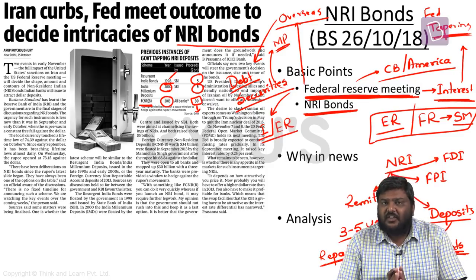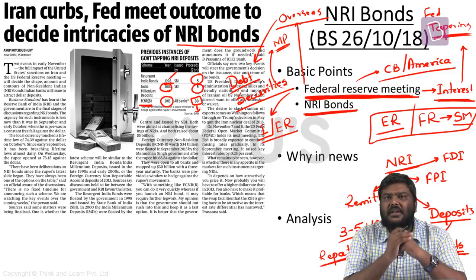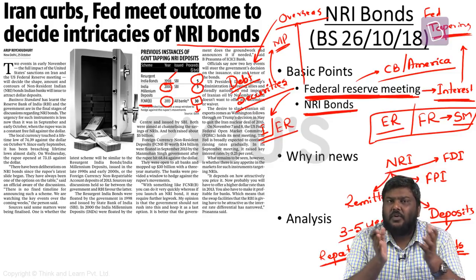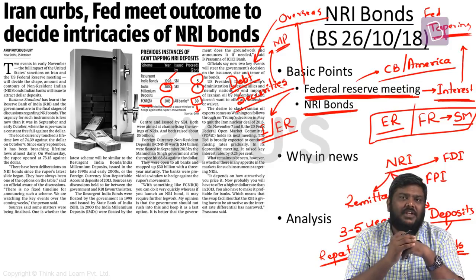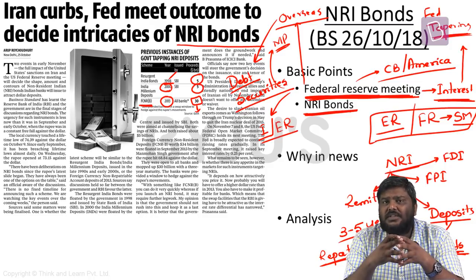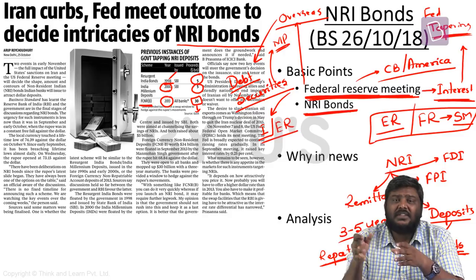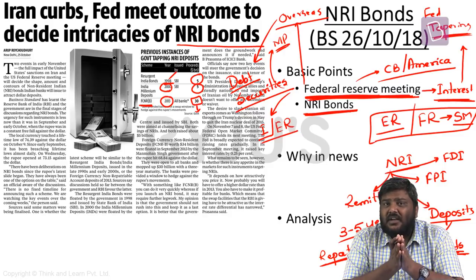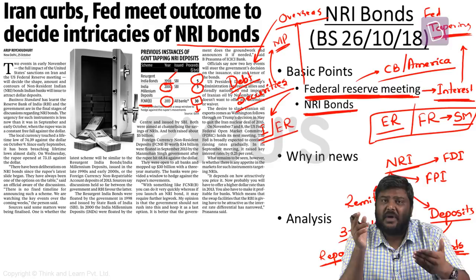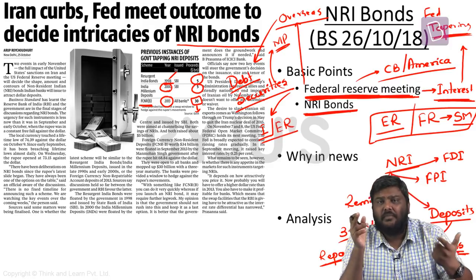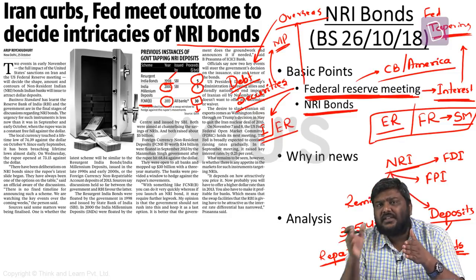Experts say these kinds of bonds should be used as a last resort to control rupee decline. While they bring in huge amounts of dollars to control rupee depreciation in the short term, the banks which issue these bonds bear the brunt at maturity if there is a further decline in the rupee's value. Because if the rupee depreciates further, the repayment liability on these banks will be much higher when the bonds mature. That is why whenever these bonds are issued, banks are allowed to hedge their risk in the market.